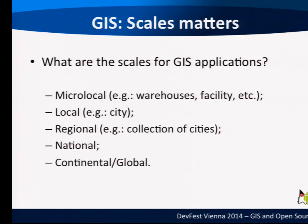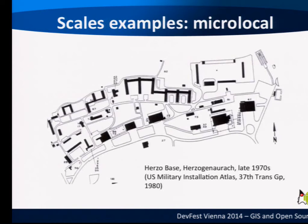What scales can GIS work at? The objects we discuss can be very small or as big as the Earth. There are four kinds of scales: micro-local, where the area of interest could be a warehouse or facility; local, such as a city; regional, a collection of cities; and then national, continental, and global. An example of micro-local is a NATO base — you add layers on top to see family housing, mess hall, gym, and other features, each represented as a polygon with an attribute.